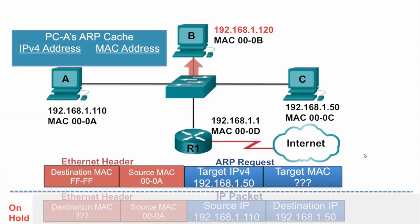PCA receives the broadcast so it must process it. Its ARP process examines the ARP request and compares its own IPv4 address against the target IPv4 address, and notices that they are not the same.